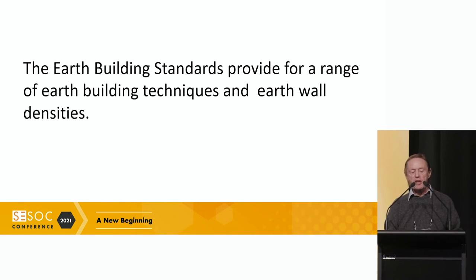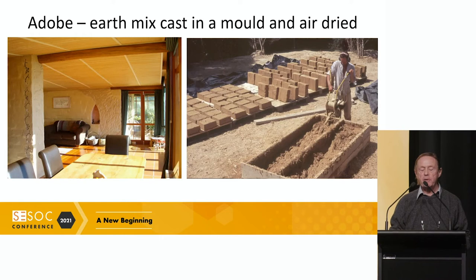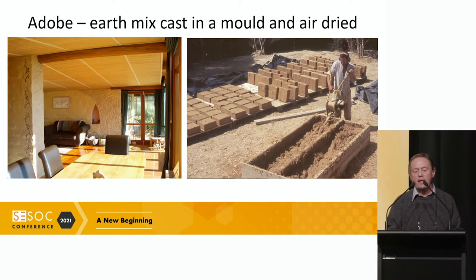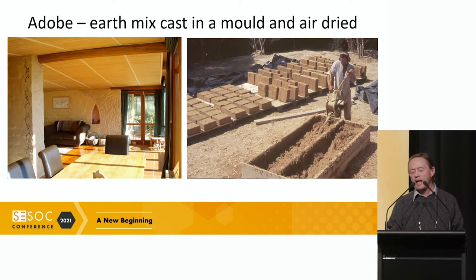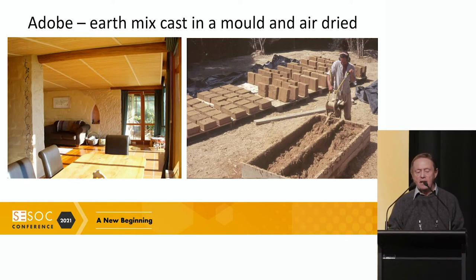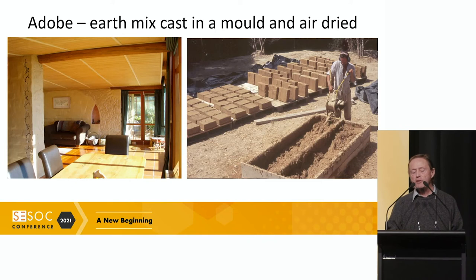The earth building standards provide for a range of earth building techniques and earth wall densities. The first technique is adobe — earth mixed into a mould, cast, and then air dried. In the slide on the right, we have a mixing box with the clay mix — a mixture of clay, silt, sand, and straw being mixed with a small rotary tiller. It can also be mixed with your feet or with a rotary hoe mounted on the back of a tractor. After the mix is allowed to settle, preferably overnight, it's then cast in a mould. In the background of the photograph, you can see the adobes drying. After about a week, they're turned on their side to increase drying. After about a month, they're ready to stack on pallets and be taken to the building site.